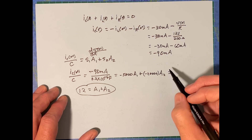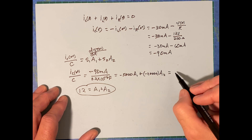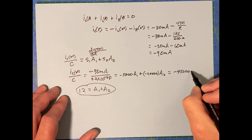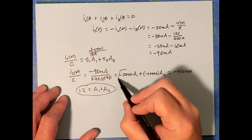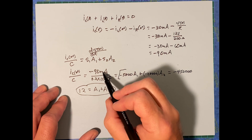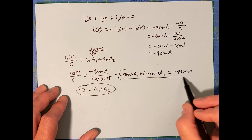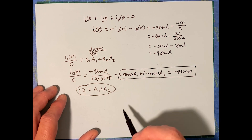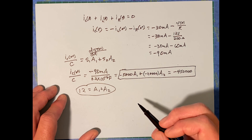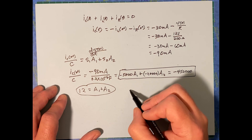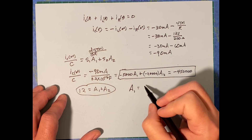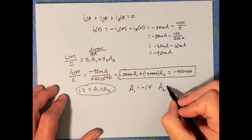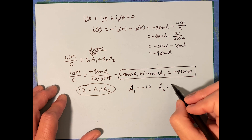Evaluating the derivative equation gives us negative 450,000 on the left-hand side. We have two equations and two unknowns, so we can solve for A1 and A2. Solving those simultaneous equations gives A1 equals negative 14 and A2 equals 26.